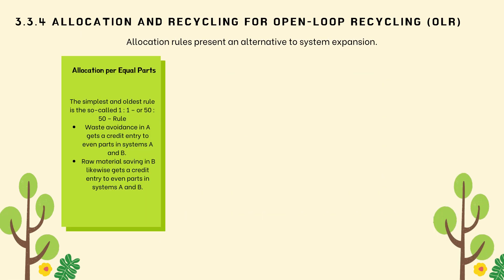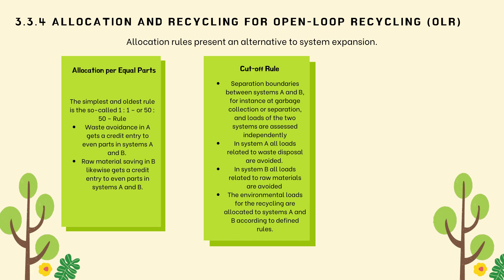Allocation rules present an alternative to system expansion. The first rule is allocation per equal parts, also called the 1-1 or 50-50 rule. Waste avoidance in A gets a credit entry split equally between systems A and B. Raw material saving in B likewise gets a credit entry split equally between A and B. For an assessment of system A via 50-50 allocation, system B need not be completely considered, so fewer data are required compared to system expansion.